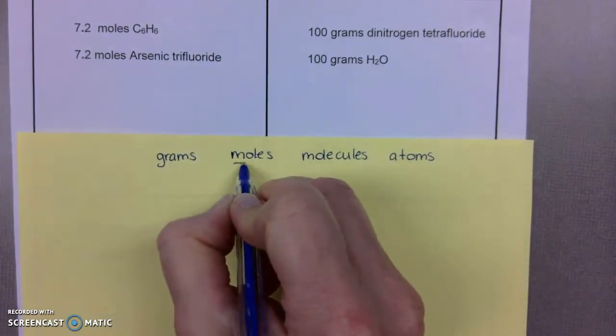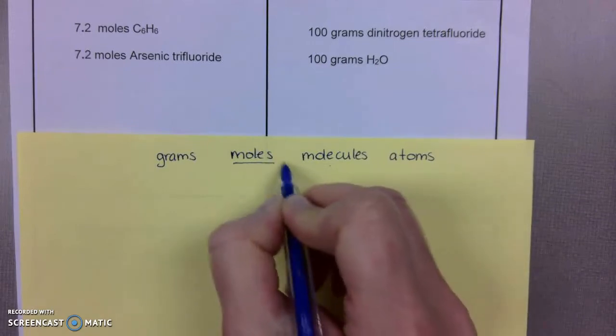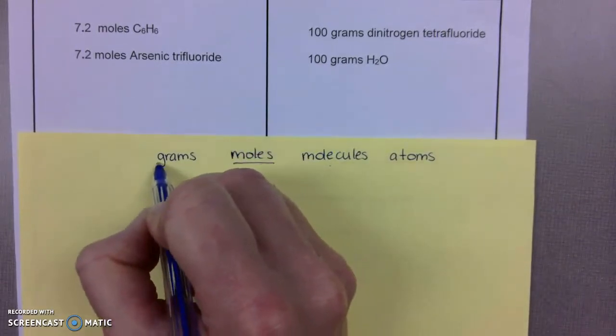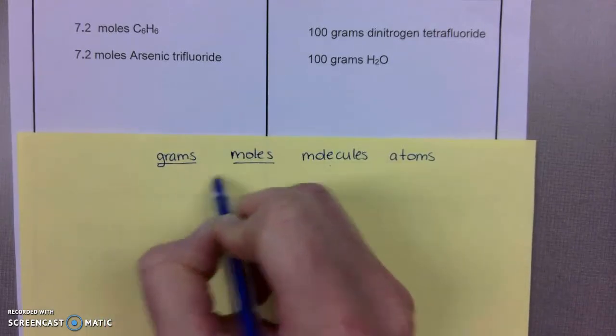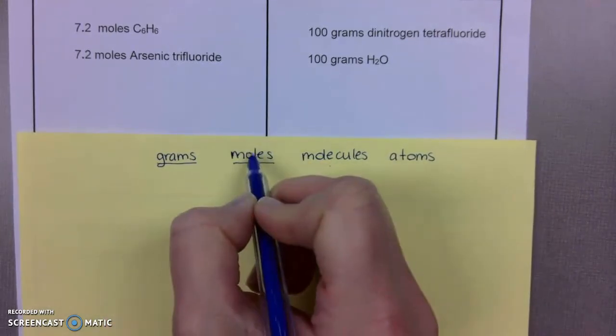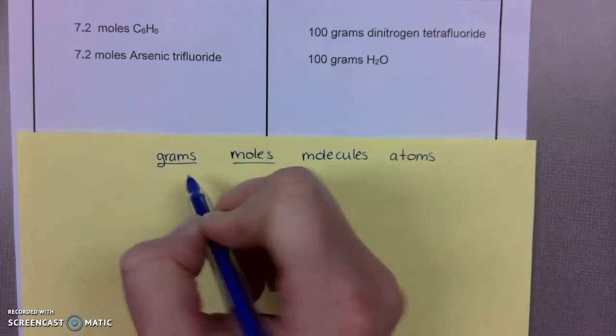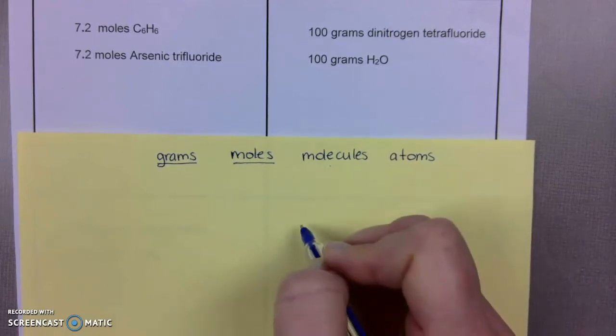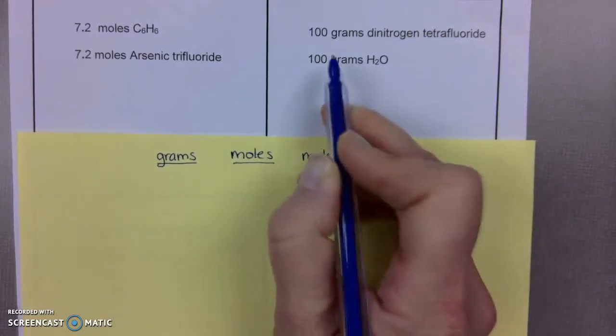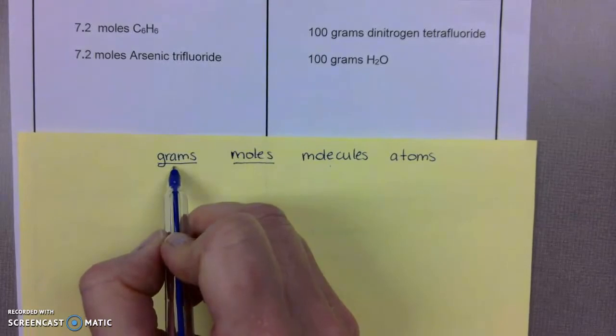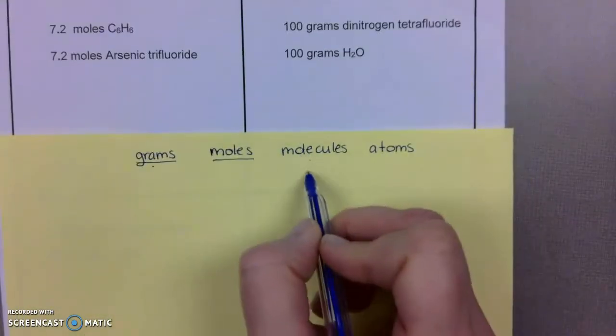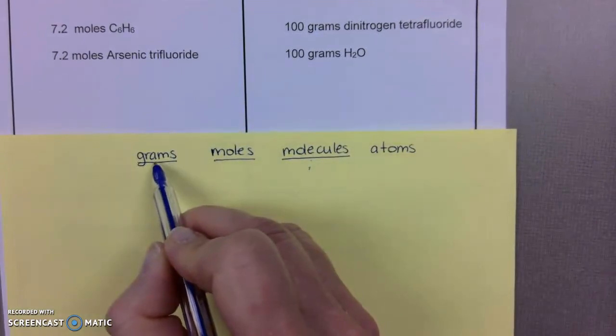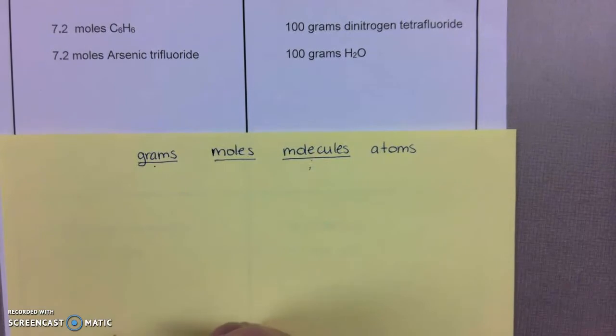If we're starting with moles, we can convert to molecules using one conversion step. If we start from grams to moles, we can use one conversion step. We can also convert moles to grams in one conversion step. However, if you notice from this example, we're starting in grams, and I'm asking you to find the number of molecules. In order to do so, you need to make sure you do two separate conversions.